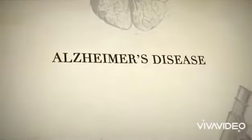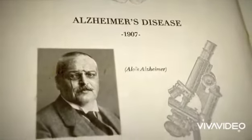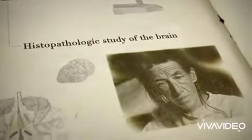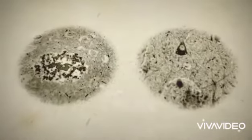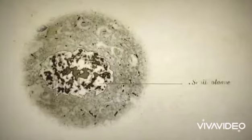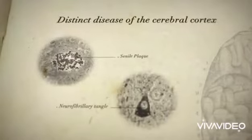Alzheimer's disease was described for the first time in 1907 by the German psychiatrist Alois Alzheimer. In performing a histopathologic study of the brain of his patient, August D, suffering from dementia, he brought to light the presence of two types of lesions in the brain: senile plaques and neurofibrillary tangles. He reached the conclusion of a distinct disease of the cerebral cortex.